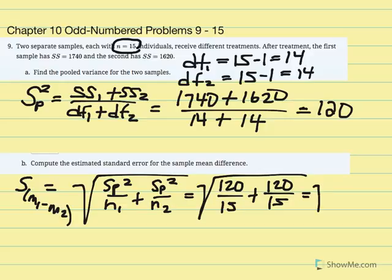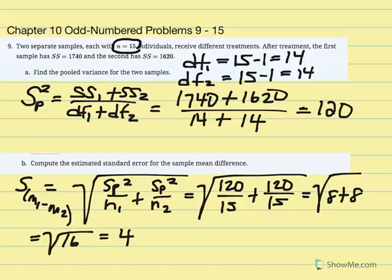Taking these as separate fractions: 120 divided by 15 equals 8, so 8 plus 8 equals 16. We're looking for the square root of 16, which equals 4. So we have our estimated standard error of the mean difference equal to 4, and we have our pooled variance of 120.